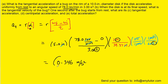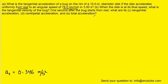So this would be the correct answer to Part A. For Part B, to calculate the final tangential velocity, we consider the tangential velocity equation, which tells us that the tangential velocity equals the radius multiplied by the final angular velocity.